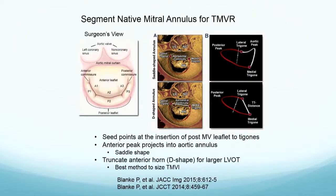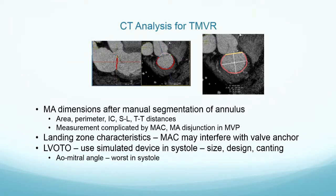When we have the native mitral annulus, you need to do a special thing with the software: segment out the posterior leaflet. You go around from trigone to trigone. Anatomically there's a saddle shape, so the anterior part that goes up into the aortic valve is excluded when you draw a straight line from trigone to trigone — that's the best method for sizing. You create a 2D projectional image giving many parameters to fit the proper valve. You want to look at landing zone characteristics including MAC that can interfere with the anchor, and then look at LVOT issues. A lot depends on the design you're placing. You want to look at the aortomitral angle, which is worst in systole, and see how the canting may cause outflow obstruction.